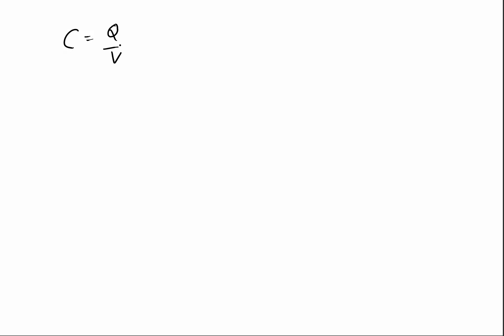We have seen that capacitance is given as C = q/V. In terms of electromagnetic quantities, q can be written from Gauss's law as the surface integral of D·dS over a closed surface S enclosing a volume V, and V is simply the negative line integral of E·dl over the length l.